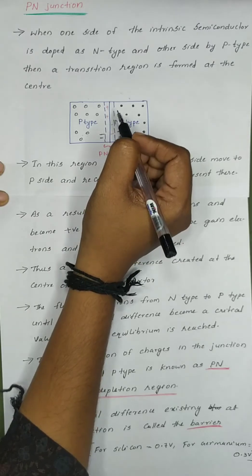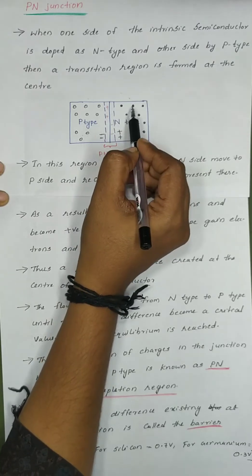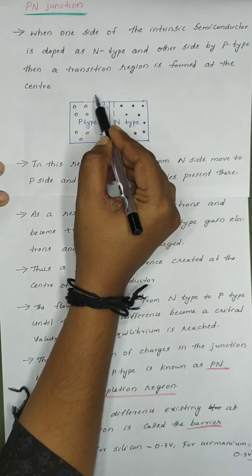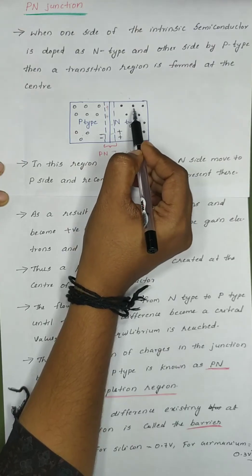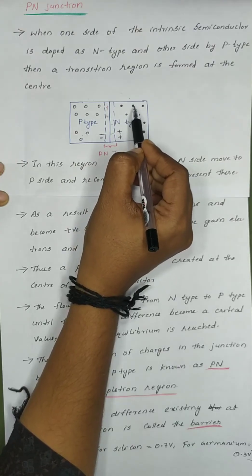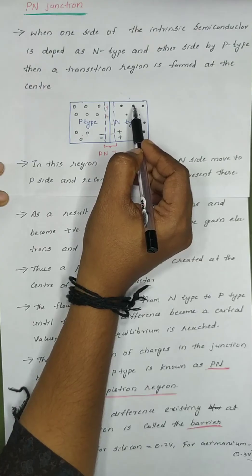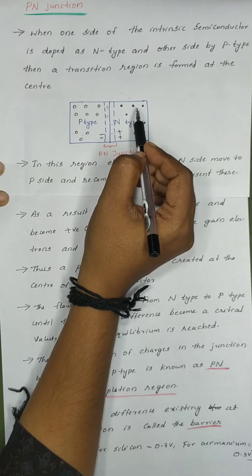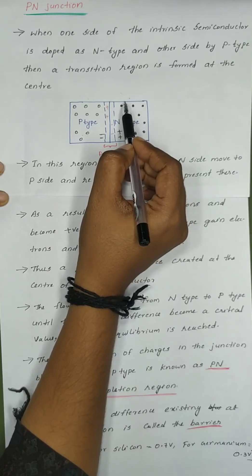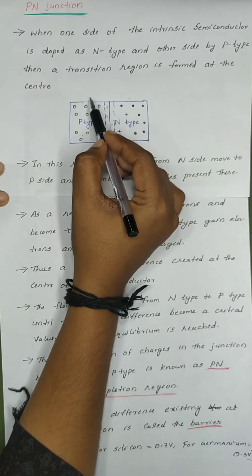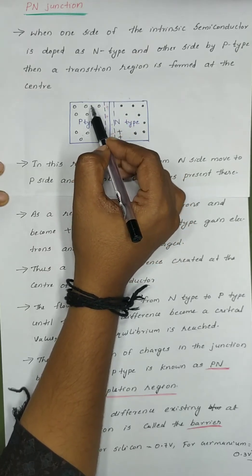Then we will consider an electron and its movement. What is an electron vacancy? If there is an electron vacancy, we call it a hole. We say that it is a positive charge. An electron will be charged here.